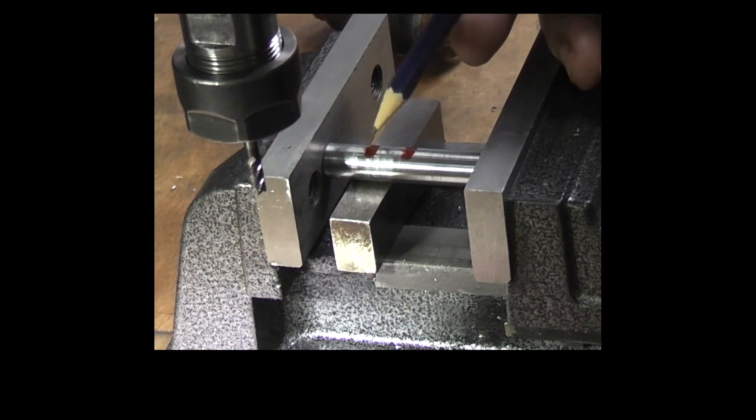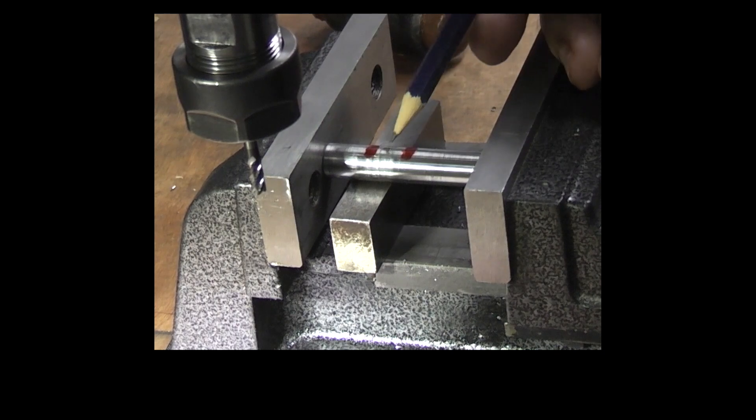I've just put two red marks each side of the mark where the grub screw was touching, and I want to put a flat on between these two marks.